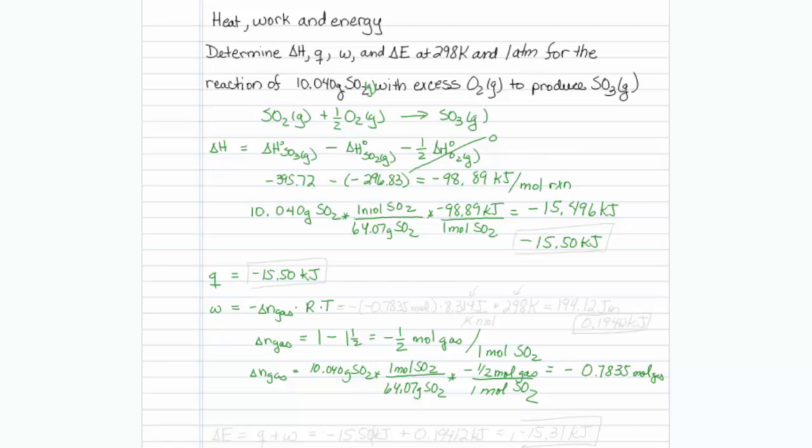Now I'm ready to put this in my formula. So I will say minus a minus 0.7835 moles of my gas times R, which is 8.314 joules per kelvin mole of gas times my temperature, which is 298 Kelvin, and that turns out to be 194.12 joules or 0.194 kilojoules.